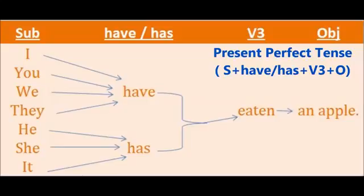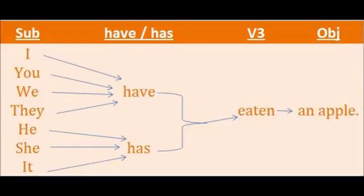We have the same subjects here from I to it. We have two helping verbs: 'have' and 'has'. Have is used by the subjects like I, you, we, they. And has is used by the subjects like he, she, it. Examples: I have eaten an apple. She has eaten an apple.